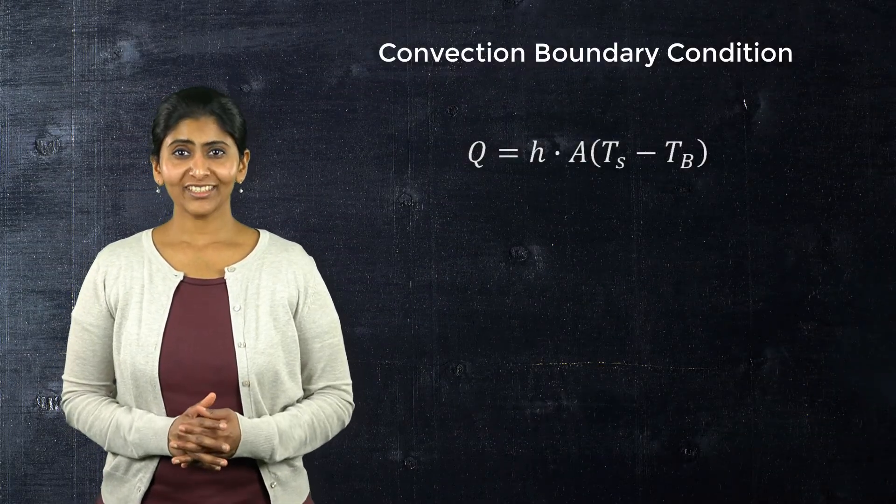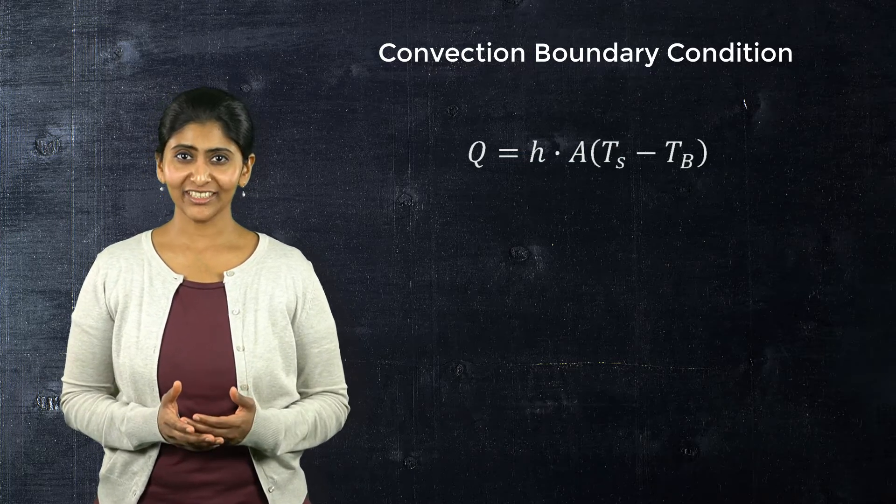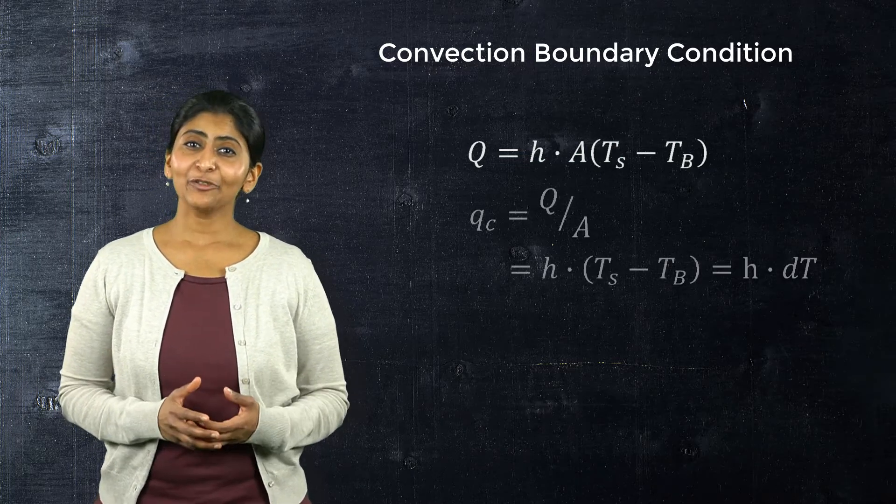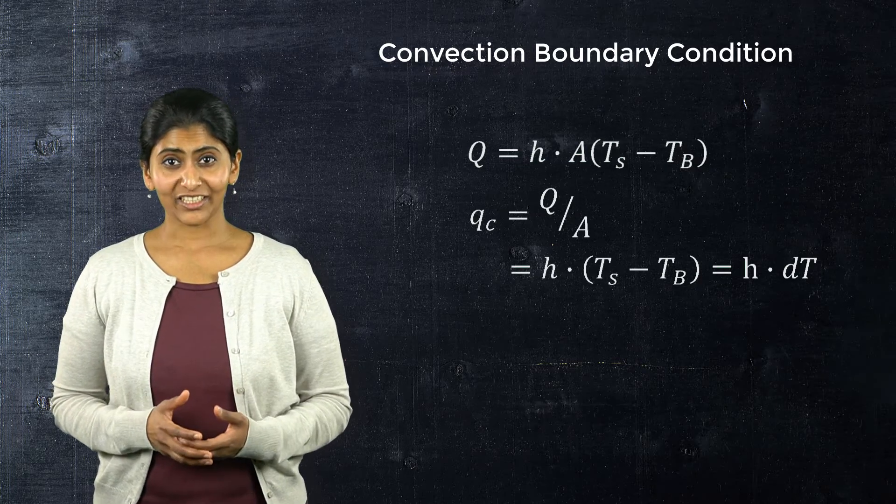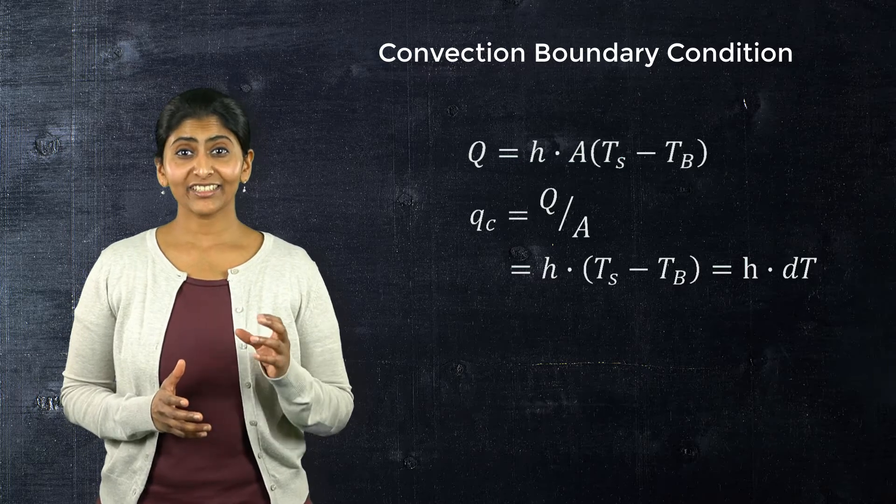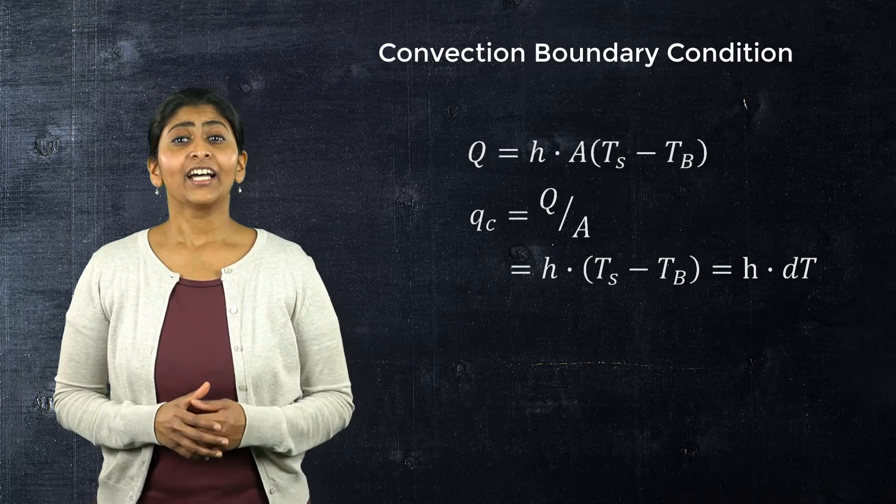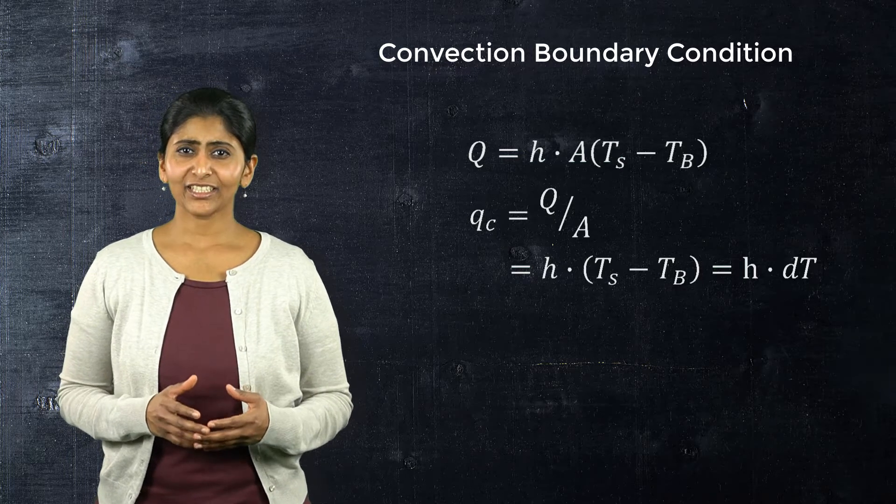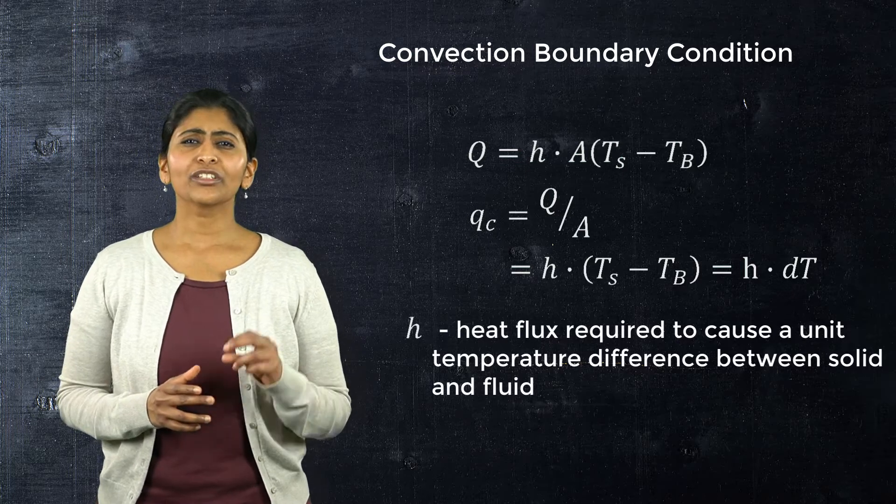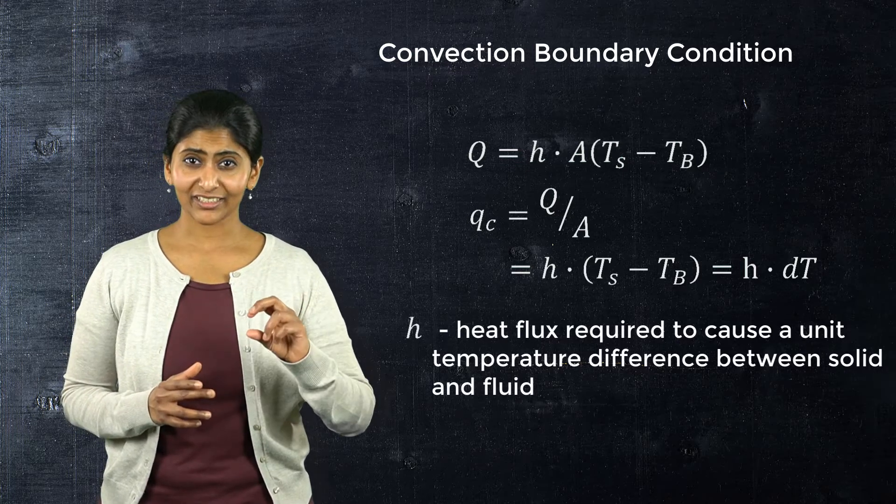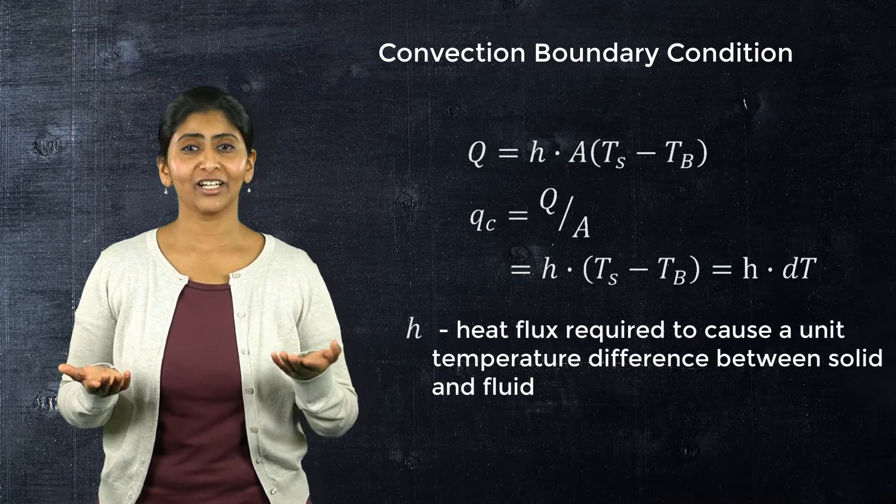Rewriting the above equation in terms of convective heat flux rate at the surface, Q_c, the equation can be rewritten in this form. In this equation, dT represents a temperature difference between the solid and the fluid. Then the film coefficient, H, may be thought of as the amount of heat flux needed to cause a unit difference in temperature between the solid surface and fluid bulk temperatures.